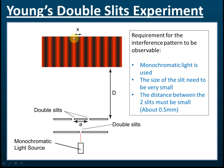There are a few things you need to know about this experiment. First, you need to know the requirements for the interference patterns to be observable. First, we need to use monochromatic light. Second, the size of the slit needs to be very small, because the wavelength of light is very small. So if we want diffraction to occur, the wavelength must be about the size of the slits, and therefore the slit size must be very small.